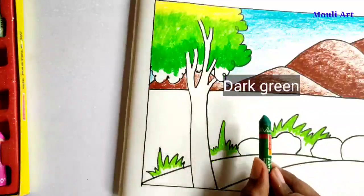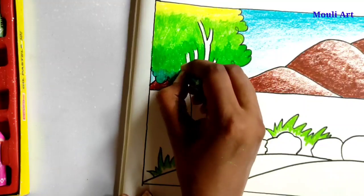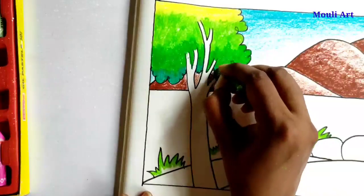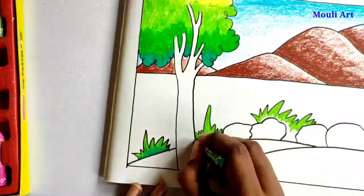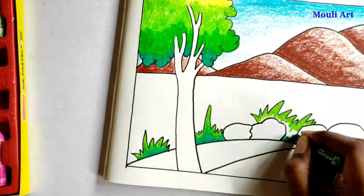Last we'll use dark green color. Then with dark green color we'll color the grass below the part and on the side. Light green which I've done before.